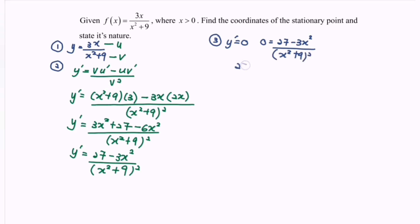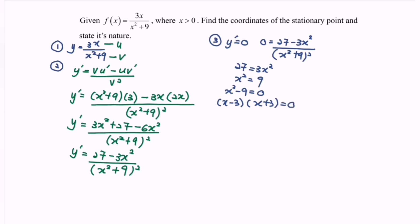From this, 27 = 3x², so x² = 9, meaning x² − 9 = 0. Factoring: (x − 3)(x + 3) = 0, giving x = −3 or x = 3. Since the question states x must be greater than 0, only x = 3 is valid.